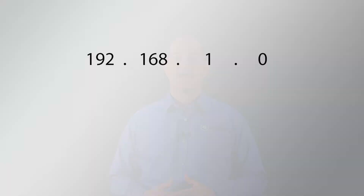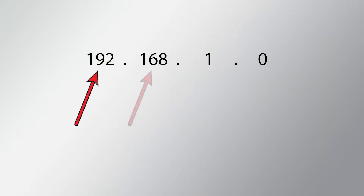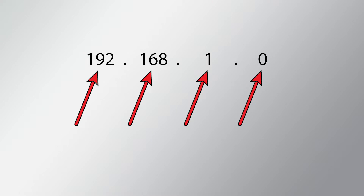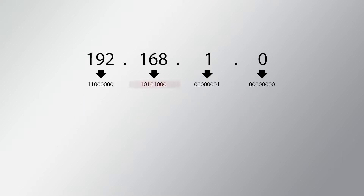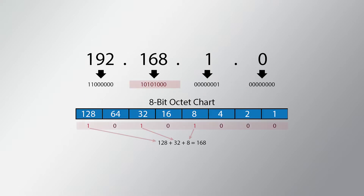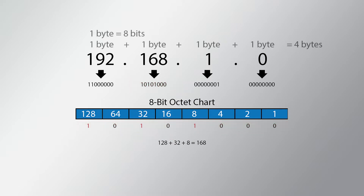An IP, or Internet Protocol, address is an identifier for a computer or device, also called a host, on a network. Each IP address consists of four octets of numbers ranging from 0 to 255, separated by a period. Each octet is a decimal number converted from an 8-bit binary number. Each octet is one byte in size, and the complete IP address is four bytes in total.